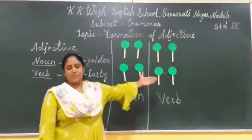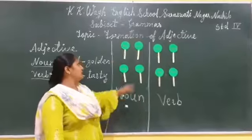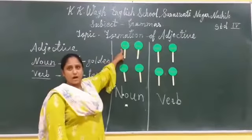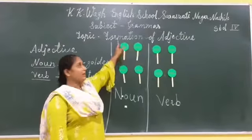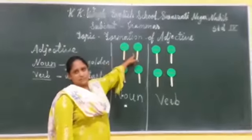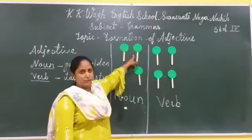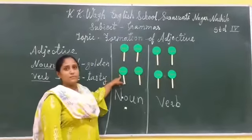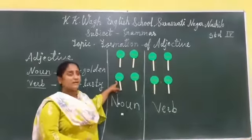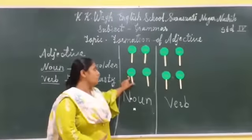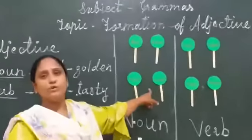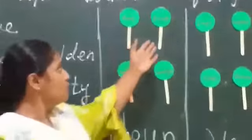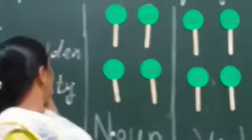Students, there are some more examples. The word fool — fool is a noun, and foolish is an adjective. The word beauty — beauty is a noun, and beautiful is an adjective here.